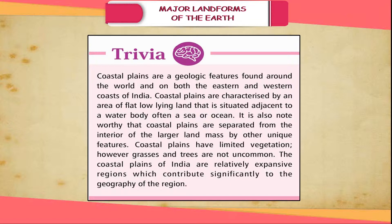Trivia: Coastal plains are a geological feature found around the world and on both the eastern and western coasts of India. Coastal plains are characterized by an area of flat, low-lying land situated adjacent to a water body, often a sea or ocean. They are separated from the interior of the larger landmass by other unique features. Coastal plains have limited vegetation; however, grasses and trees are not uncommon. The coastal plains of India are relatively expansive regions which contribute significantly to the geography of the region.